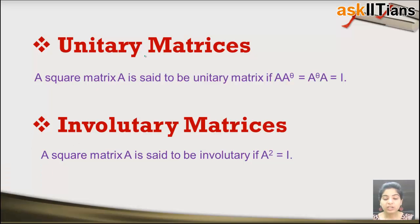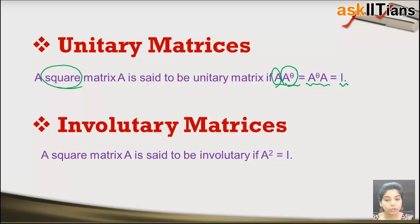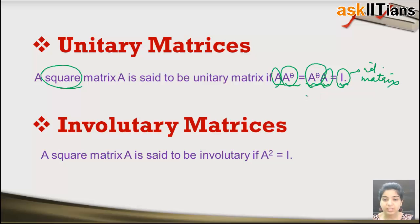Next is the unitary matrix. A square matrix A is said to be unitary if A·A^θ equals A^θ·A equals the identity matrix I. That is, if you multiply A by its conjugate transpose and get the identity matrix, or multiply the conjugate transpose by A and get the identity matrix, then A is a unitary matrix.